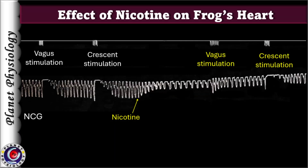Here is the ideal tracing from this experiment. The key observations are: nicotine decreases heart rate and force of contraction. After application of nicotine, vagus stimulation fails to stop the heart. However, crescent stimulation still stops the heart in diastole.